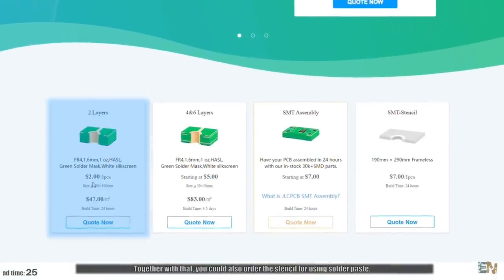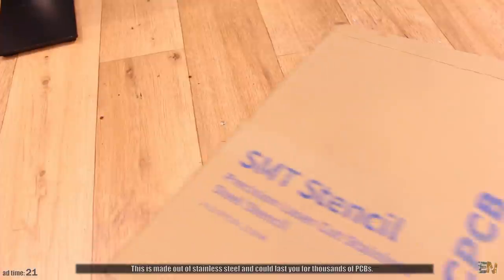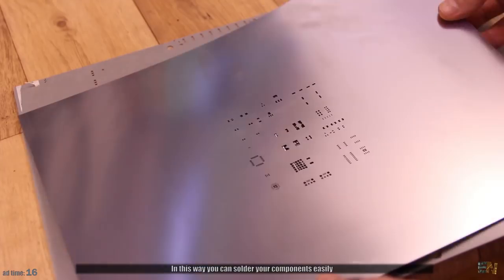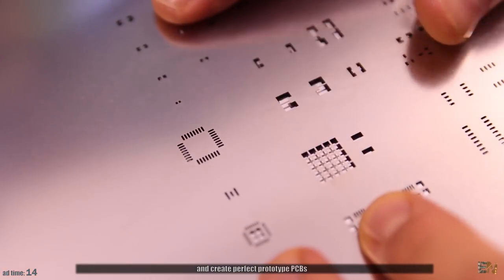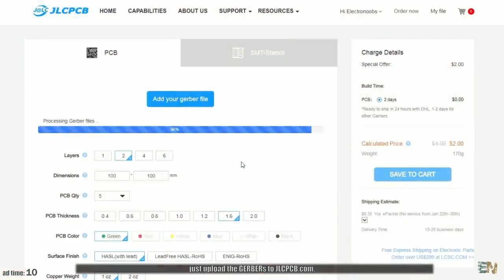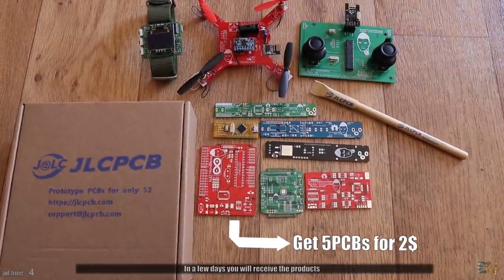Together with that you can also order the stencil for using solder paste. This is made out of stainless steel and could last for thousands of PCBs. In this way you can solder your components easily and create perfect prototype PCBs. The order process is so simple, just upload the gerbers to jlcpcb.com, select the PCB settings, mark that you also want the stencil and place the order. In a few days you'll receive the product.